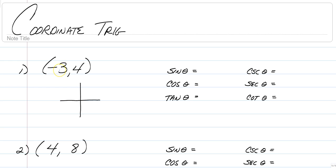The only thing we have to do is think about where is negative 3 comma 4. That would be 3 units to the left and 4 units up, so negative 3 comma 4 is right here. We're going to draw our line that goes straight to the origin, also known as our terminal side, and we always go to the x-axis. That angle over there by the origin is known as theta, and we just have to think about the dimensions of this triangle — 3 to the left and 4 up.